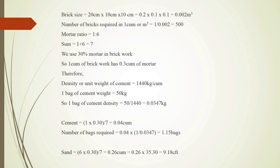Normally we know brick size is 20 cm × 10 cm × 10 cm. So calculating the volume of one brick, it is equal to 0.002 cubic meters. Number of bricks required in 1 cubic meter equals 1 divided by 0.002, which equals 500. So 1 cubic meter of brickwork requires 500 bricks.